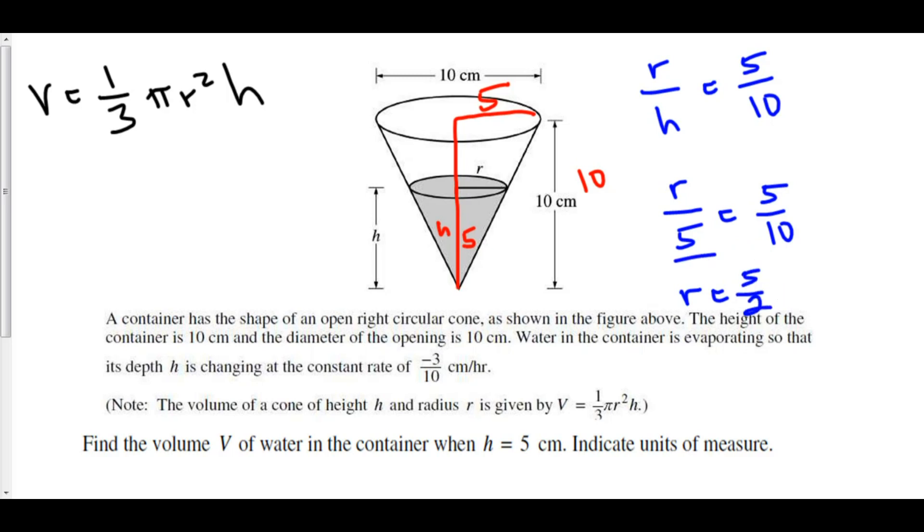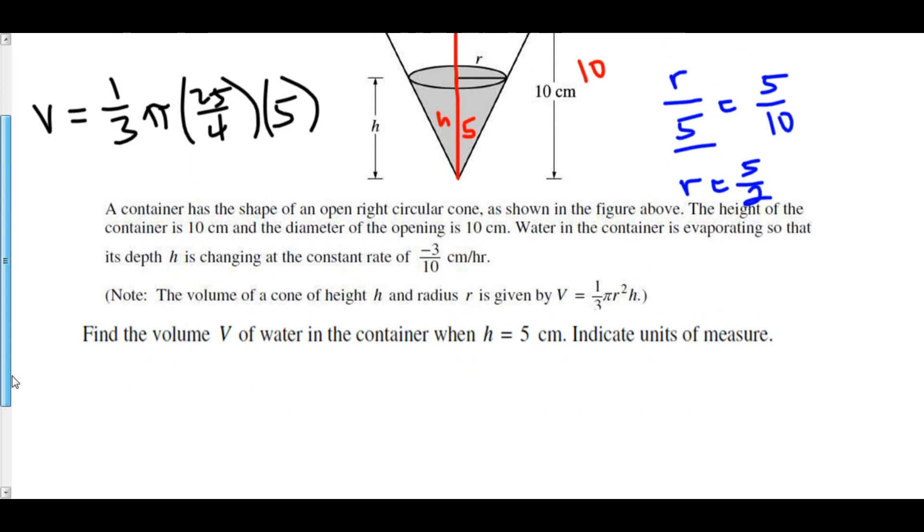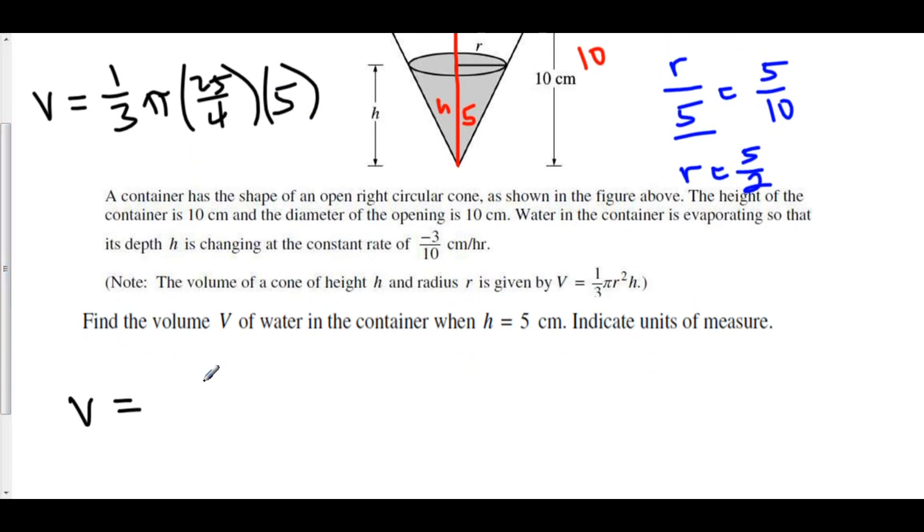Let's now plug in this information. We know that the radius is 5 over 2 when h is 5. So we have v is equal to 1 over 3 pi times 5 over 2 squared is 25 over 4. The height at this particular moment they gave us is 5. And so our volume at this particular moment is 25 times 5 times pi is 125 pi over 3 times 4 is 12. And our unit is centimeters cubed. So at this particular moment this is the volume of the water inside of our cone.